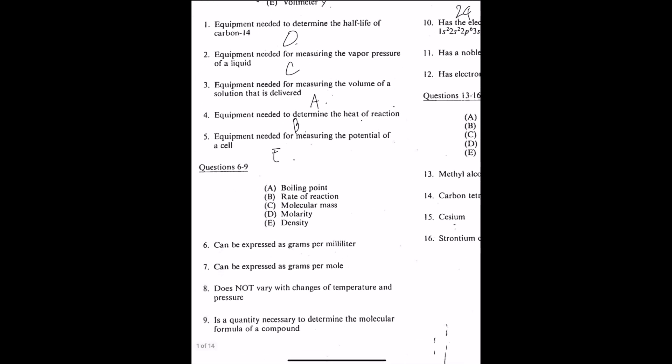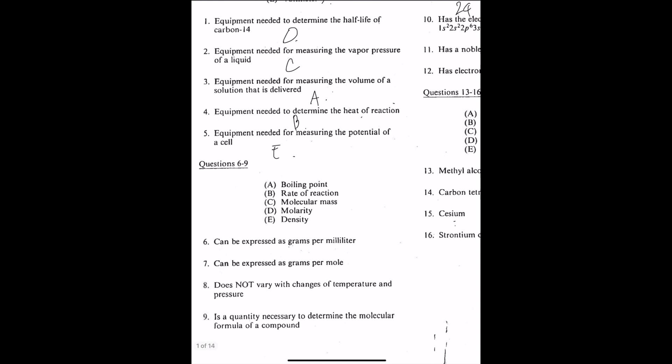Let's move on to number six. Can be expressed as grams per milliliter. Boiling point? Nope, it's related to temperature. Rate of reaction? Nope. Molecular mass? Nope. Molarity is measured by x moles over one liter. Density is measured by mass over volume. Because gram is a unit of mass and milliliter is a unit of volume, that ends with the E.